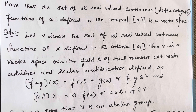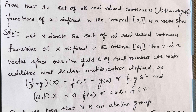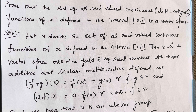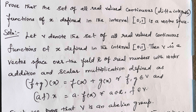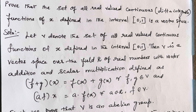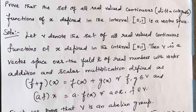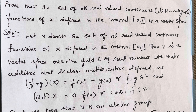Let us see what the problem is. Prove that the set of all real-valued continuous differentiable and integrable functions of x defined in the interval [0,1] is a vector space. That means you have a set of all real-valued functions — both differentiable and integrable — as functions of x. Each element in that set will be f(x), g(x), and so on, each differentiable and integrable within the interval 0 to 1.